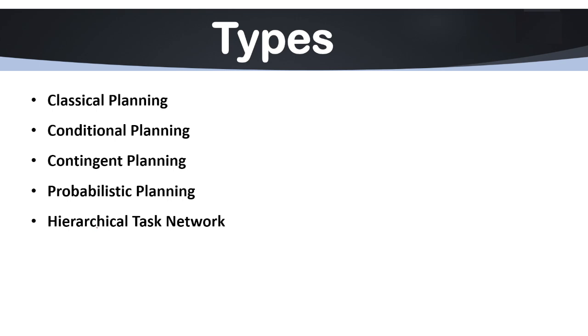Basically we have five types of planning systems. The first type is classical planning. Another is conditional planning, contingent planning, probabilistic planning, and hierarchical task network that is simply known as HTN planning.